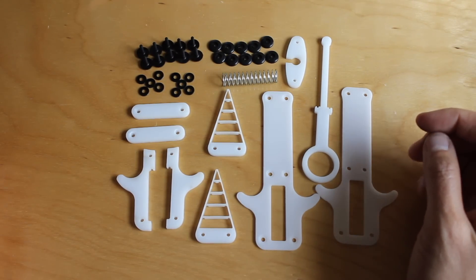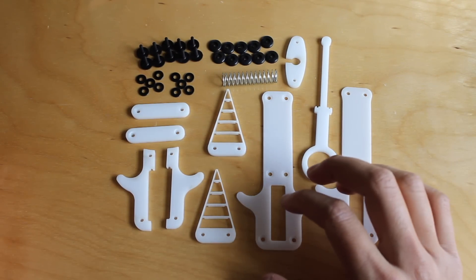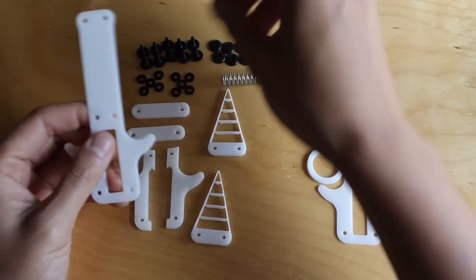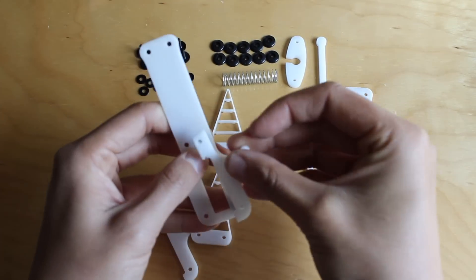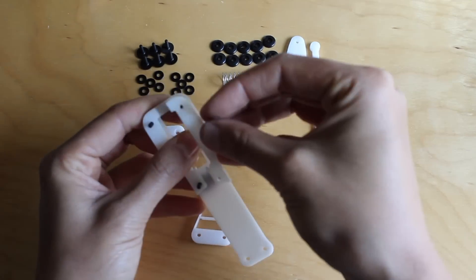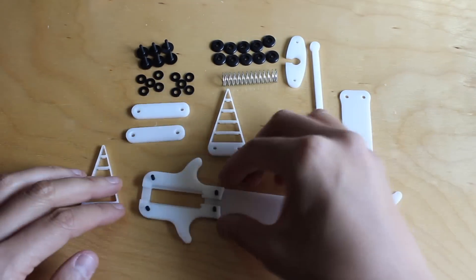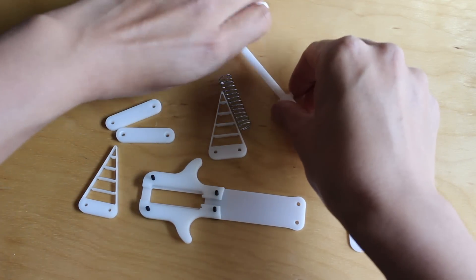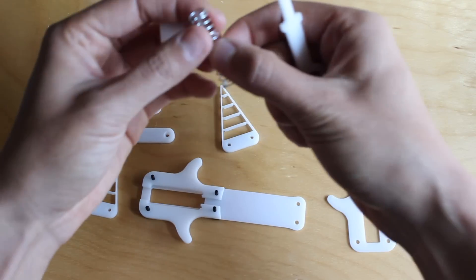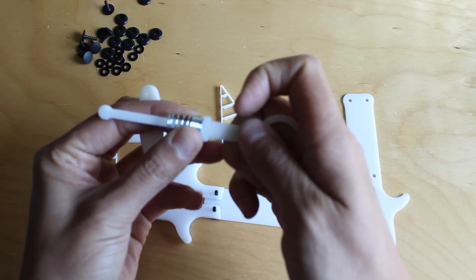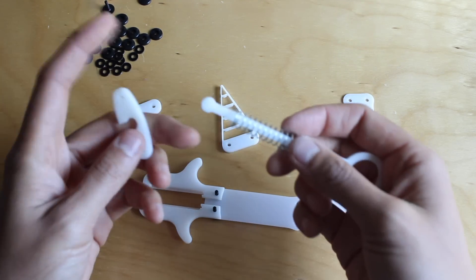So to assemble it, I'm going to start by trying to get the spring assembly together. The slider that holds the spring I actually made in two parts so that the spring would actually go on. So the spring goes onto the slider here, there's two little divots that kind of hold it in place,